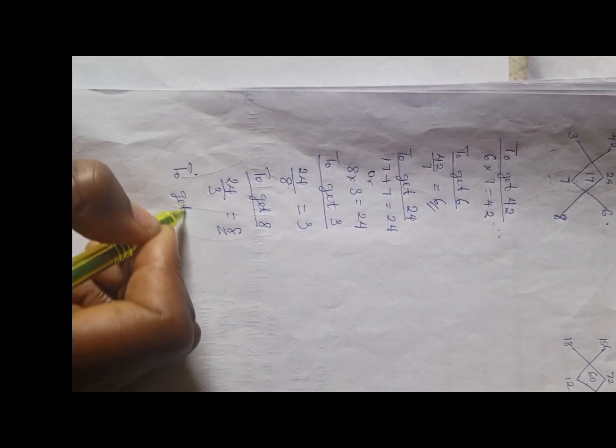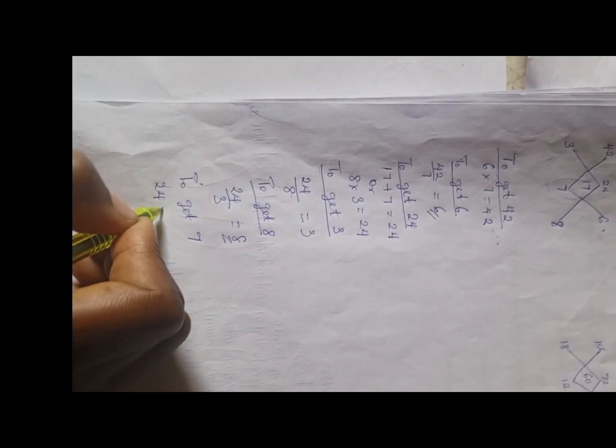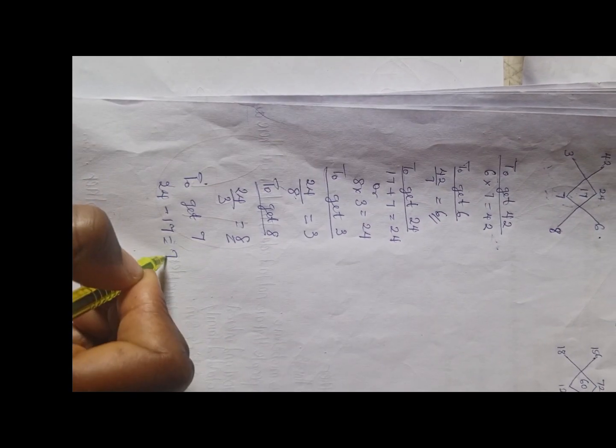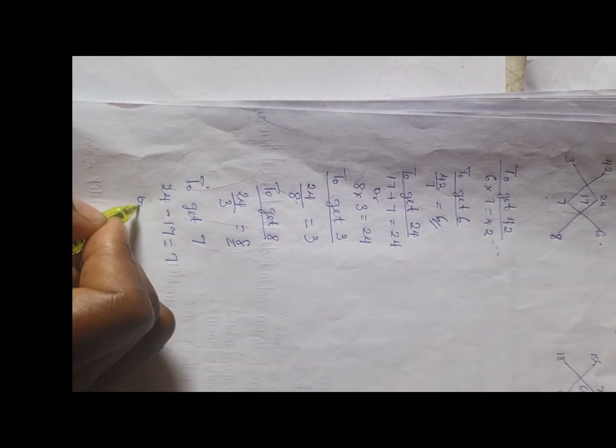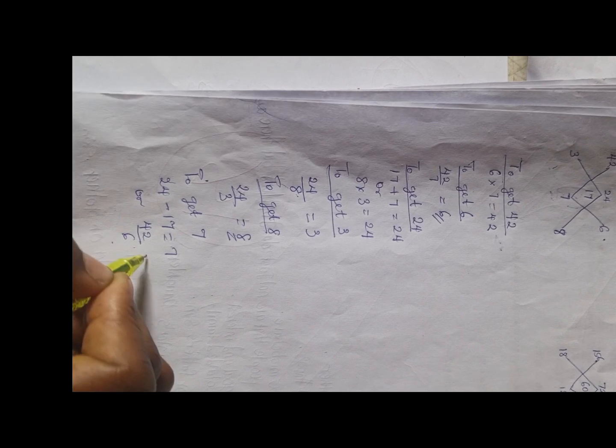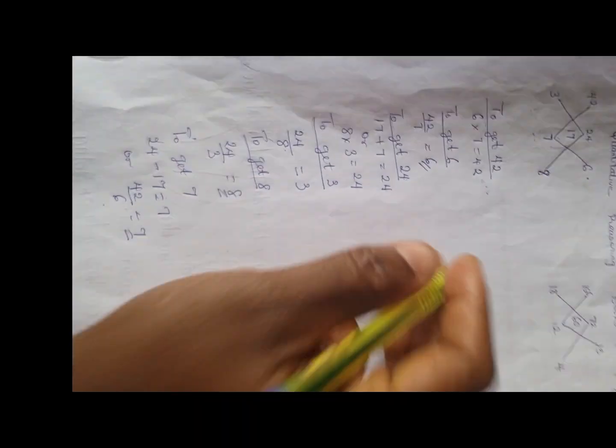So what else? We need to find 7. To get 7, you can have 24 minus 17 equals 7, or you can as well see 42 divided by 6 is 7.